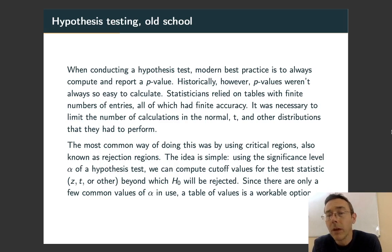The most common way of getting around that was using this idea of a critical region or rejection region. Normally when we do hypothesis testing today, we take sample data, compute a p-value, and then compare it to the cutoff value alpha, the level of significance of the test.